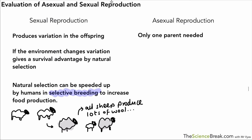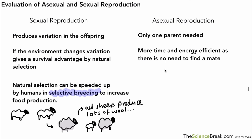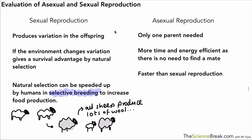With asexual reproduction, only one parent is needed — that's an advantage — and because only one parent is needed it's more time and energy efficient because you don't need to find a mate. It's also a lot faster than sexual reproduction, which we could list as a disadvantage of sexual reproduction.